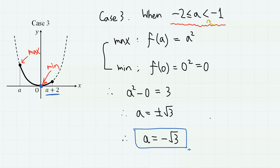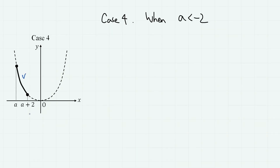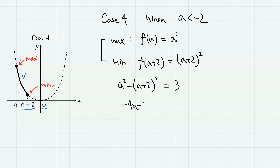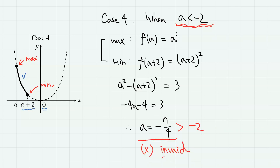In case 4, the domain is on the far left, where a + 2 < 0, so a < −2. Here the maximum value is f(a) = a² and the minimum is f(a + 2) = (a + 2)². The difference is a² − (a + 2)² = 3. Expanding, a² cancels and −4a − 4 = 3, giving a = −7/4. But −7/4 is greater than −2, so it doesn't fit this range and this value is also invalid.